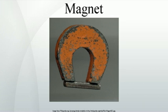The overall strength of a magnet is measured by its magnetic moment, or alternatively, the total magnetic flux it produces. The local strength of magnetism in a material is measured by its magnetization.